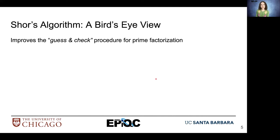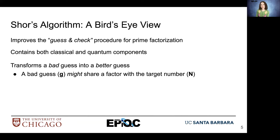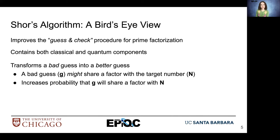At a high level, we can view Shor's as a way to improve the guess and check procedure for prime factorization. It contains both classical and quantum subroutines, and what it helps us to do is transform a bad guess of a factor of a large number into a better guess. So a bad guess g might share a factor with a target number n — that's our very large integer we're trying to factor. We want to increase the probability that g will share a factor with that large number n.